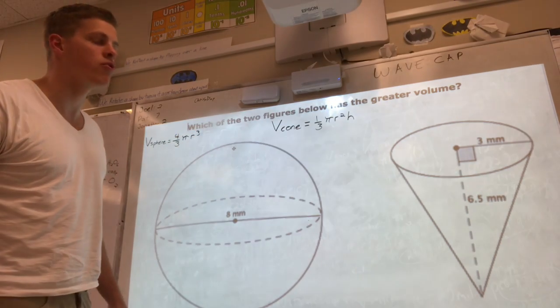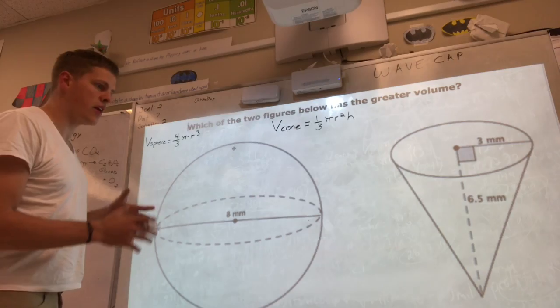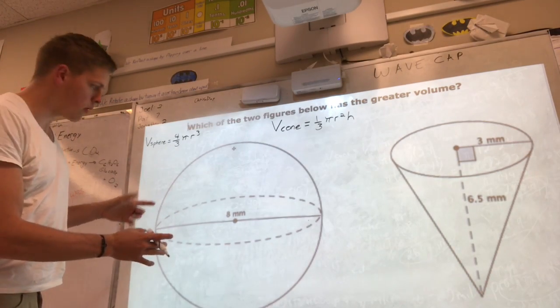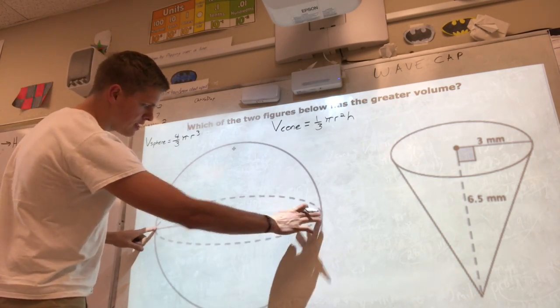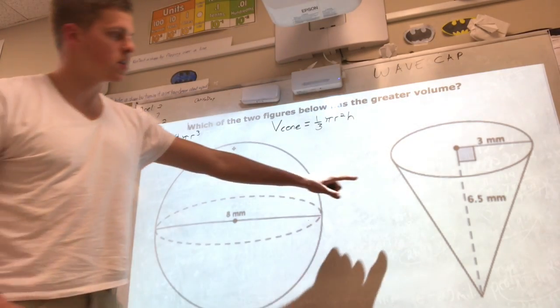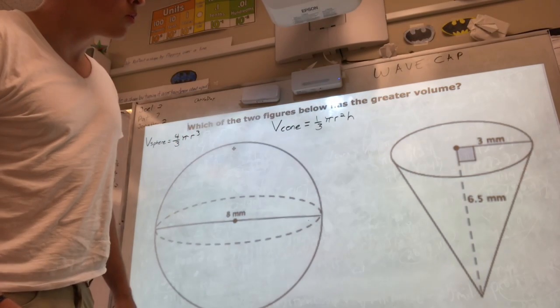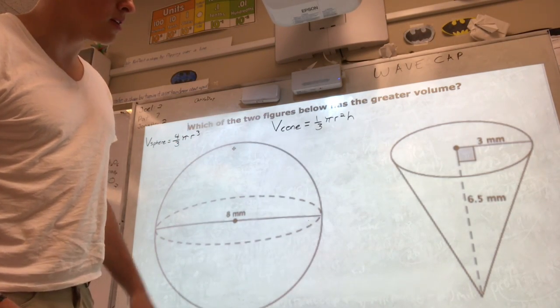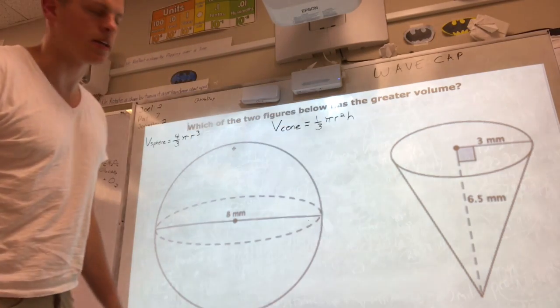So it's which of the two figures below has the greater volume? So we have here a sphere where it shows us that the diameter is 8 millimeters, and over here we have a cone where the radius is 3 millimeters and the height is 6.5 millimeters.